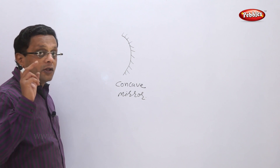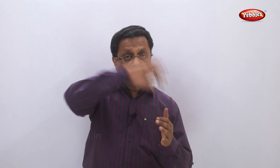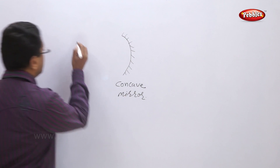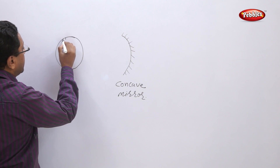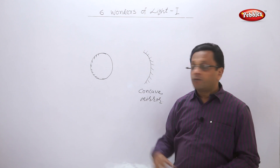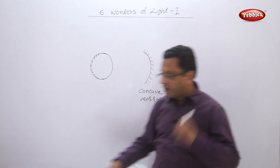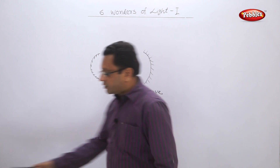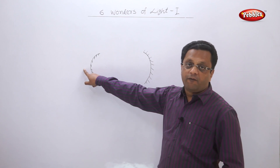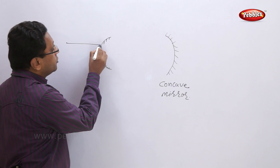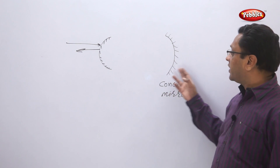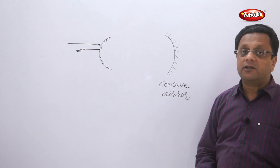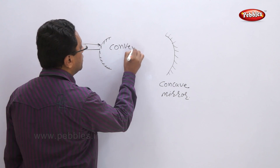Now let us take another example. Suppose I have the same ball, but instead of coating it from outside, I coat from the inside and apply some protective paint over it. Then the opposite side — the outer surface — will become reflective. Now if you cut this, the outer surface will be the reflective surface, and if light is incident on it, it will reflect. This kind of mirror you will call as a convex mirror.